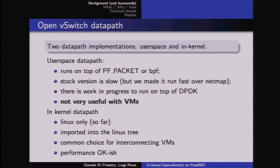The operation of the data path is extremely simple — just a hash table lookup. The slowness was due to bad code in the path that passes packets to the hash table. So it was a low-hanging fruit.